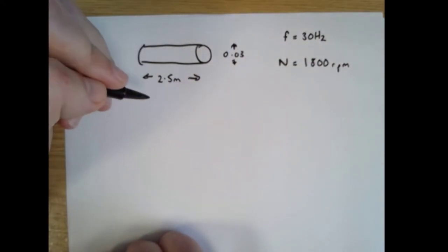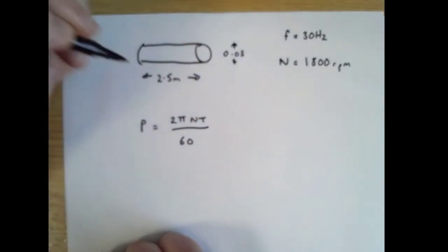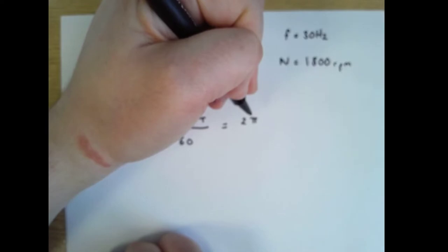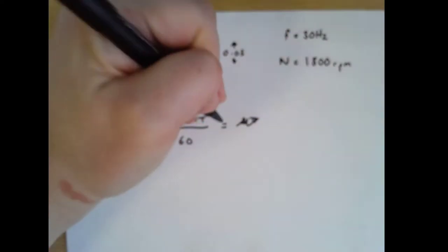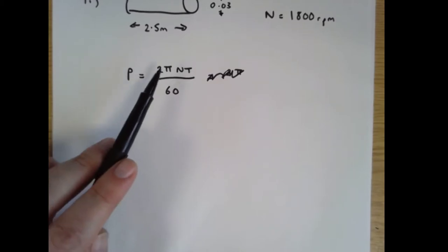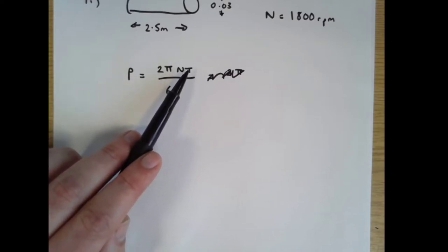Next up we've got power equals 2 pi n t over 60. I was just reading the question, which is always a good thing to do. The question says determine the maximum power that the shaft can transmit. So what we need to do is find the maximum torque that the shaft can transmit and then from torque we'll be able to translate to power because we know n.